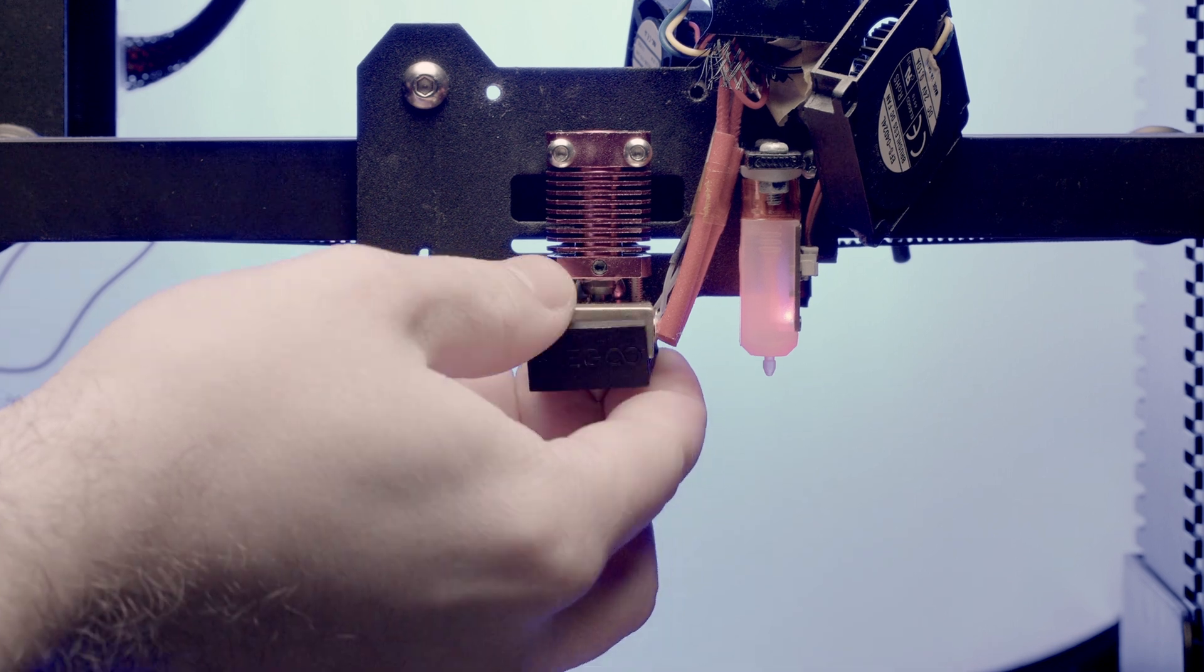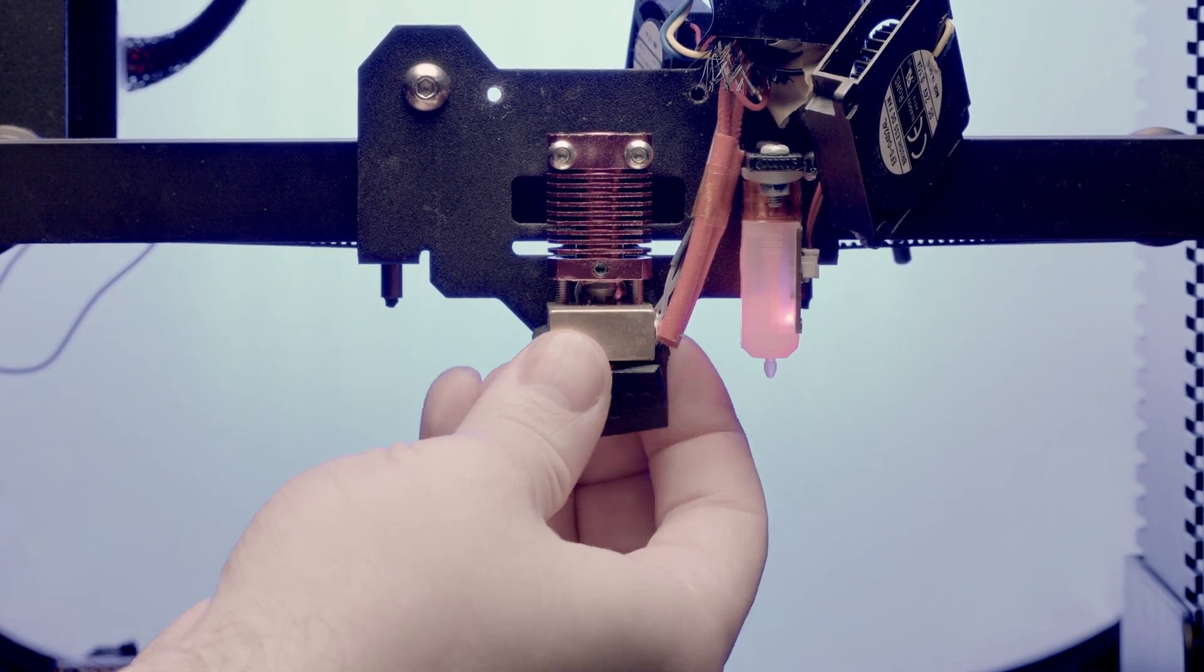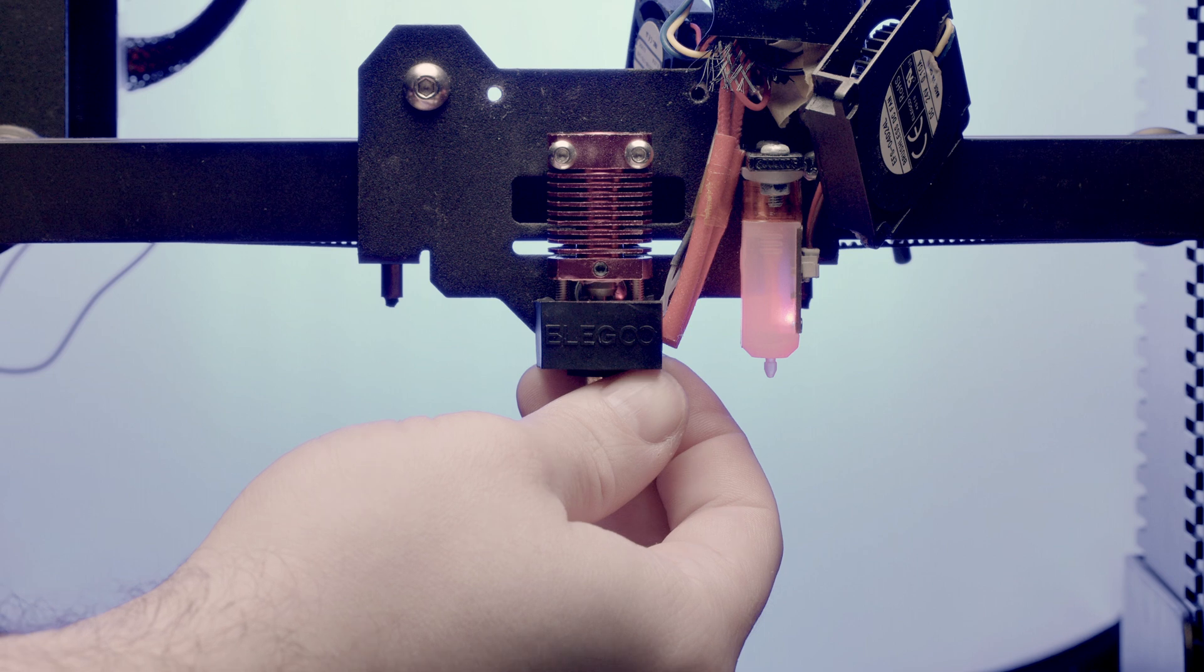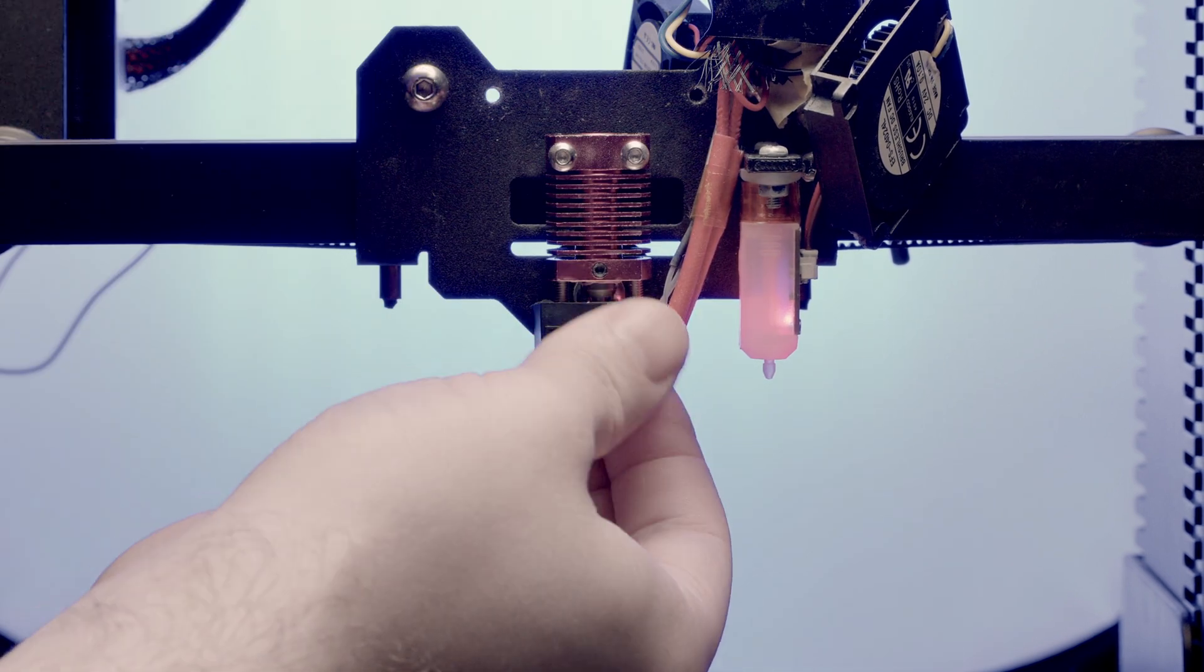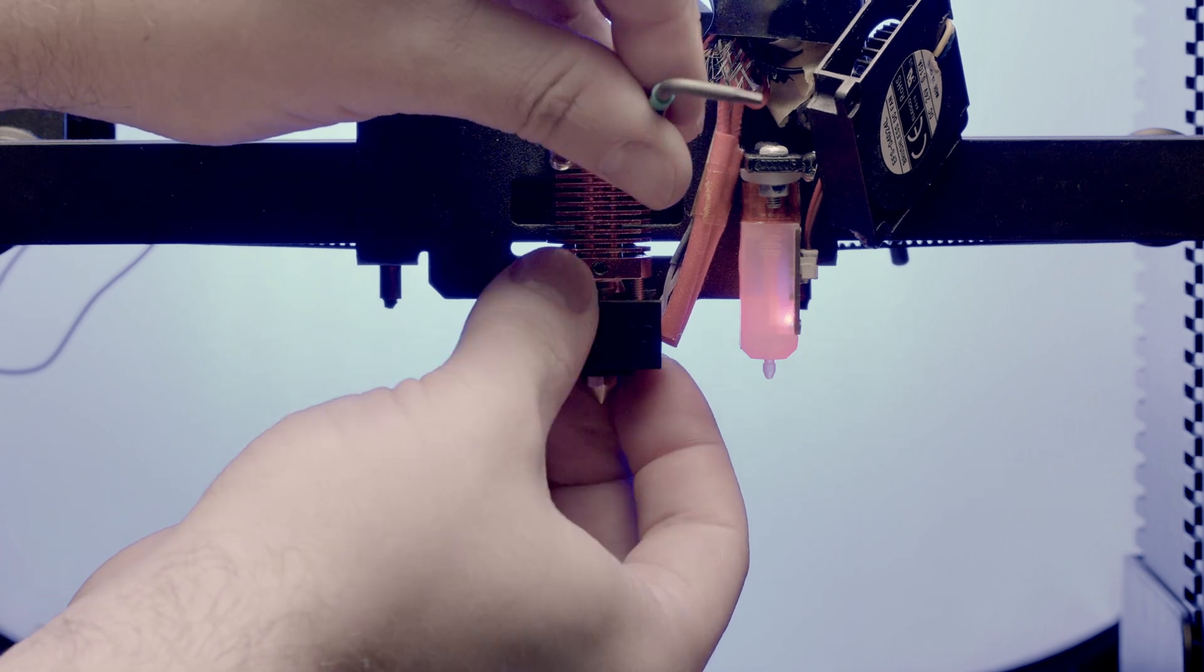The silicone sock doesn't have enough clearance to go on nicely. So we have to loosen the hot end. Just make sure it's perpendicular to the build plate when you tighten it again.